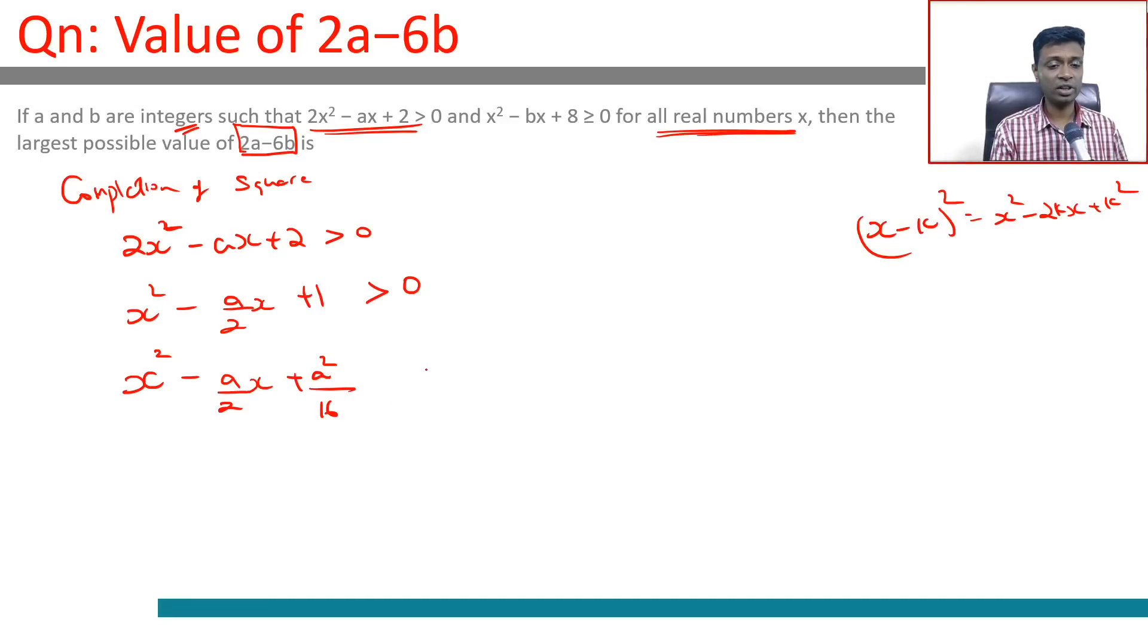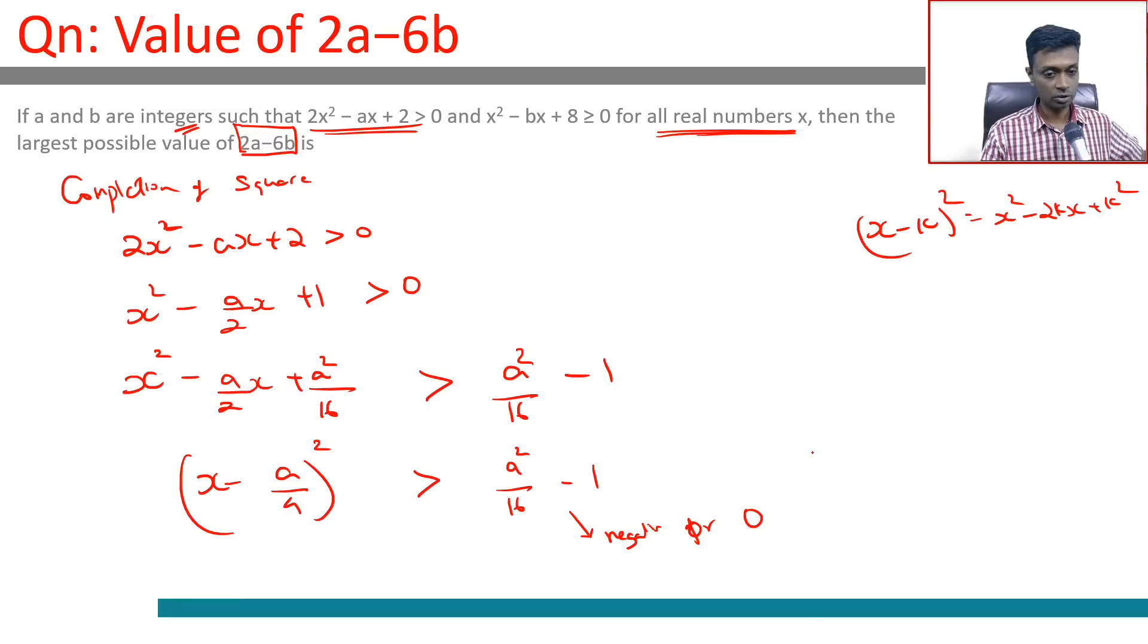I cannot just add on one side, so I'll add a²/16 on this side also and bring the +1 to this side as -1. So (x - a/4)² > a²/16 - 1. Remember, this is always true. This will always be true only if this is negative or 0, and so this always holds good. That means this expression has to be negative or 0.